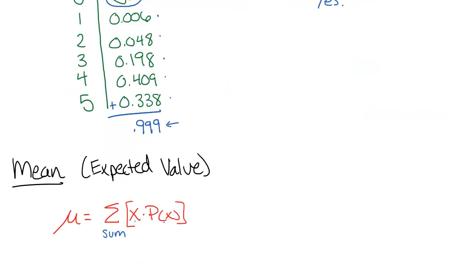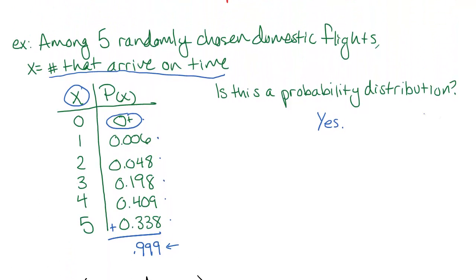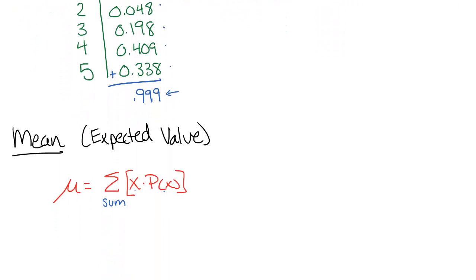When we have a probability distribution, there's a couple different things that we would like to be able to compute. The first is the mean, or sometimes this is called expected value for these types of distributions. And what this is, our mean, is sort of the average number we would expect to see if we did this over and over. So we know that among five flights, we might have none on time, we might have three on time, we might have all of them be on time. There's different possibilities. But we might want to know, on average, how many will be on time. And that's exactly what our mean or our expected value is.